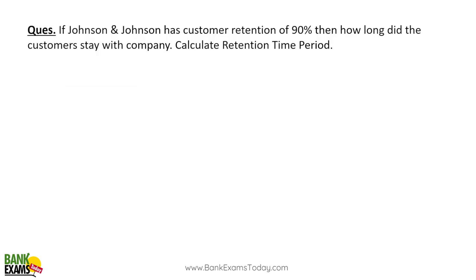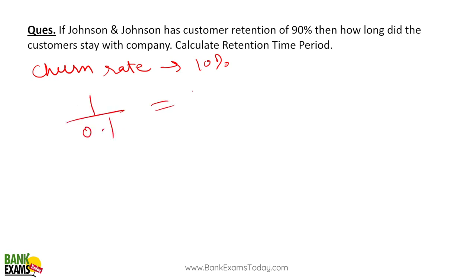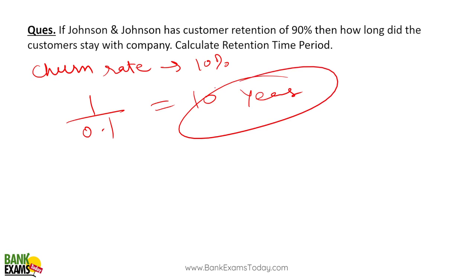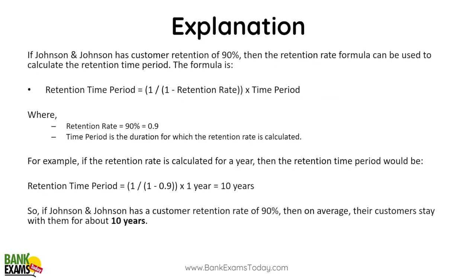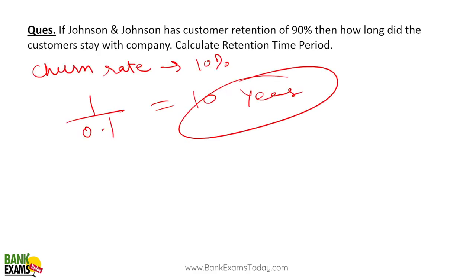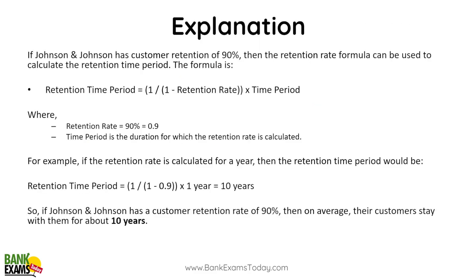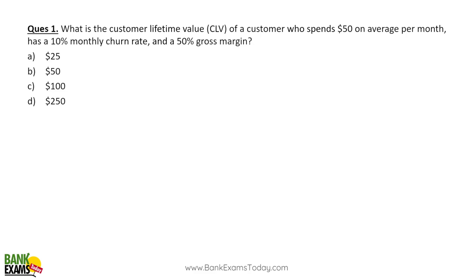Practice question: If Johnson & Johnson has a customer retention rate of 90%, what is the churn rate? Churn rate = 1 − 90% = 10%. Now calculate retention time period: 1 ÷ 0.1 = 10 years. So 10 years is the retention time period. There is a more complicated explanation on screen — you can take a screenshot and read it — but in the exam, this simple method is the right approach.